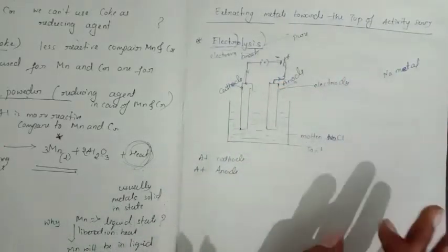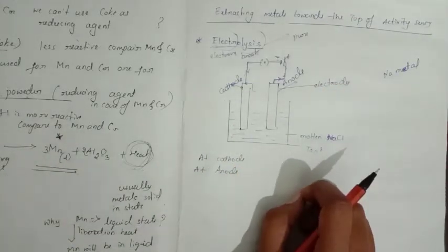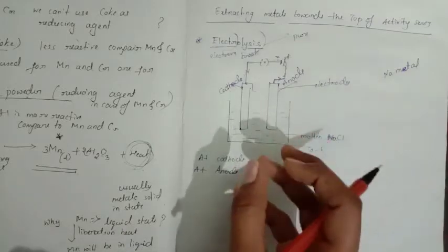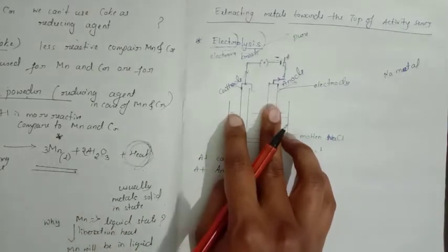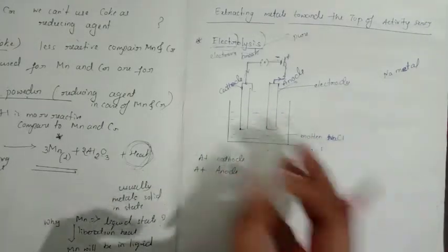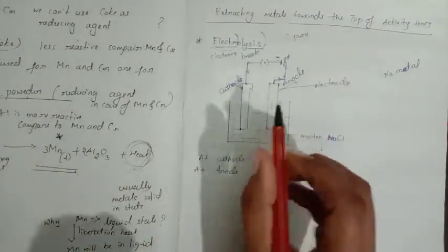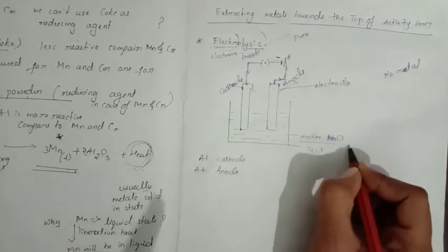The electrodes used in this setup can be inert materials, or other metal rods — they are used simply to allow the flow of current. These electrodes do not react with the solution; there is just a flow of electrons, and metals can deposit on them. The solution used here is molten NaCl.